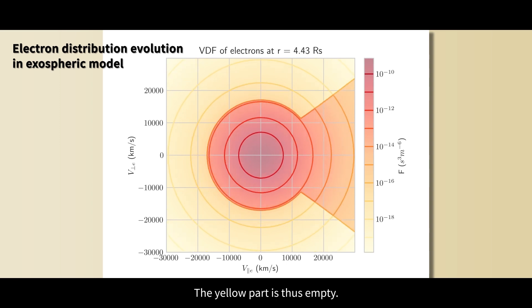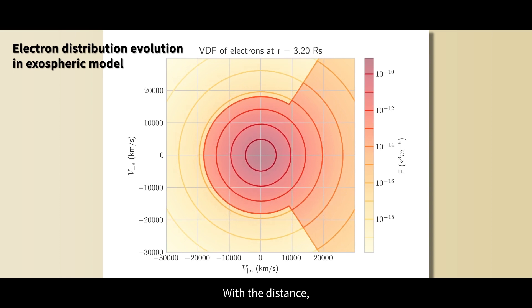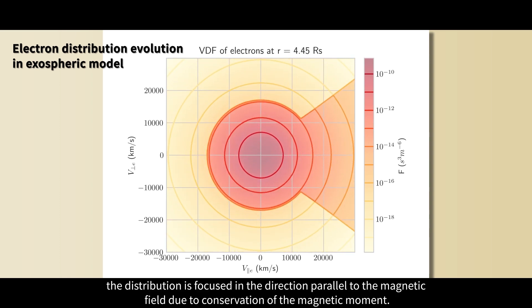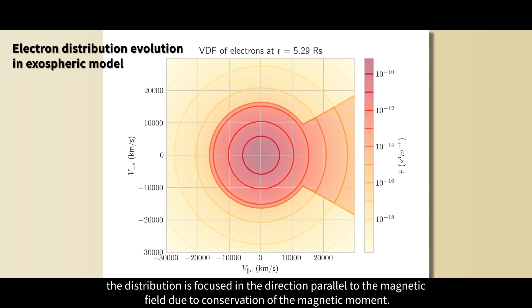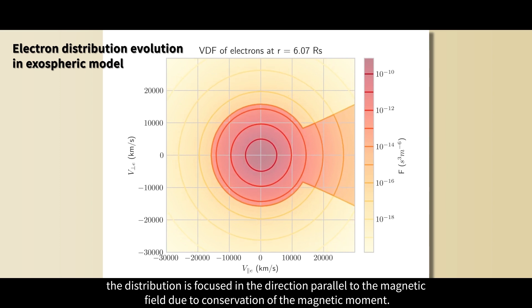The yellow part is thus empty. With the distance, the distribution is focused in the direction parallel to the magnetic field due to conservation of the magnetic moment.